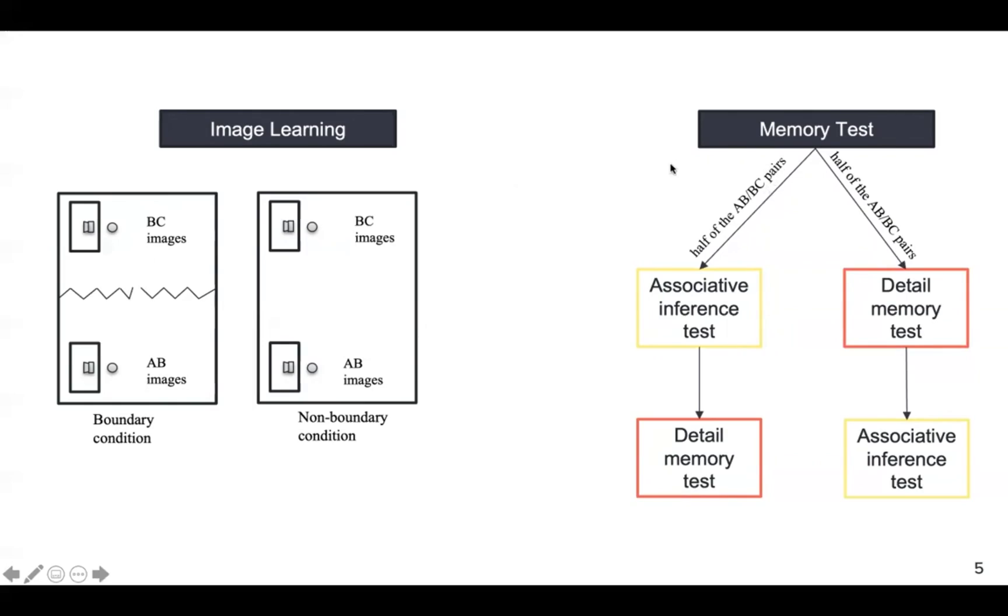In the memory test that happened two days later, we manipulated the testing order of the memory. We tested both the association and the detail memory. By manipulating this testing order, we want to see the effect of associative inference on the detail memory.